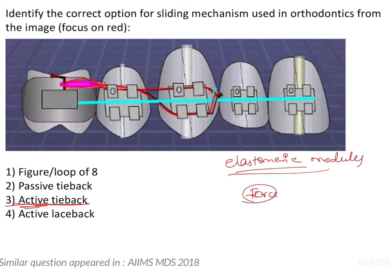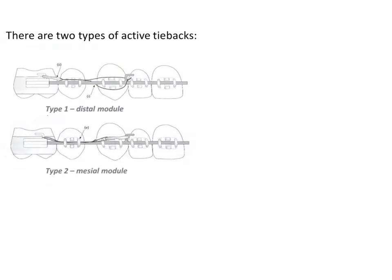There are two types of active tie backs. First is Type 1, or a distal module, where the elastomeric module is present distally on the hook of the molar tube and the ligature wire runs anteriorly, engaged into the hook of the posted arch wire. Type 2 is a mesial module, where the module is placed mesially and the ligature wire runs distally onto the hook of the molar tube.